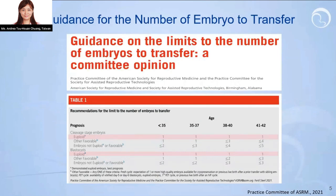This is the guidance for the number of embryos to transfer, recommended by the Practice Committee of ASRM last year. If non-screened embryos are considered, the number for transfer is recommended to increase with maternal age. If euploid embryos are considered, then the recommended numbers remain the same across different age spans, because the chromosome status in euploid embryos has been confirmed as normal.